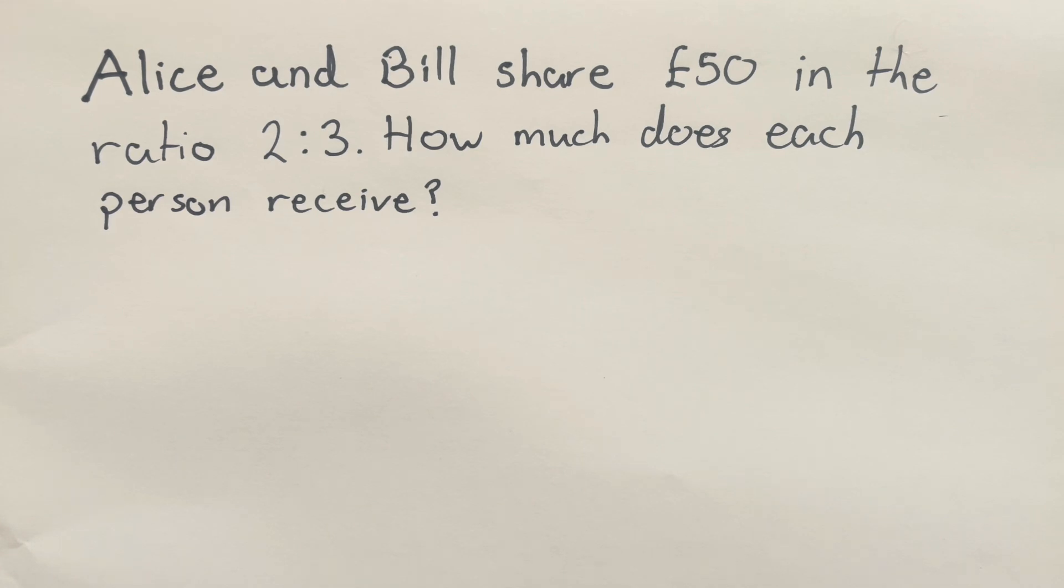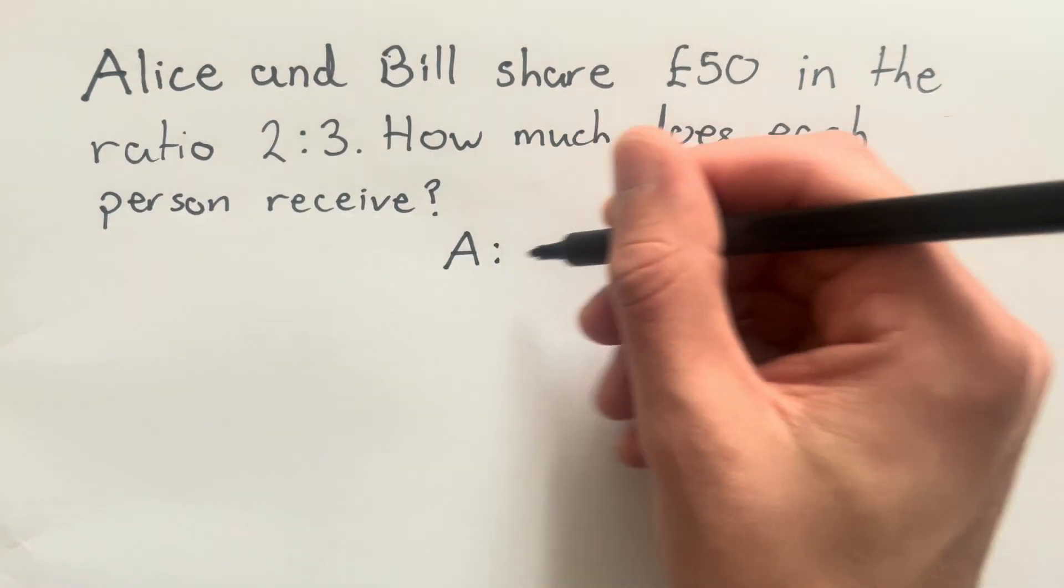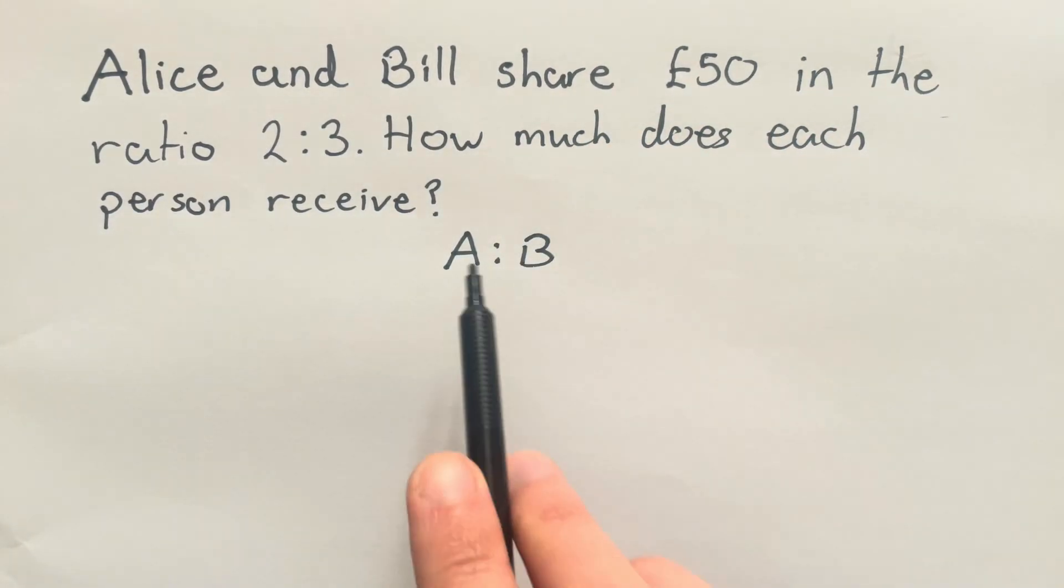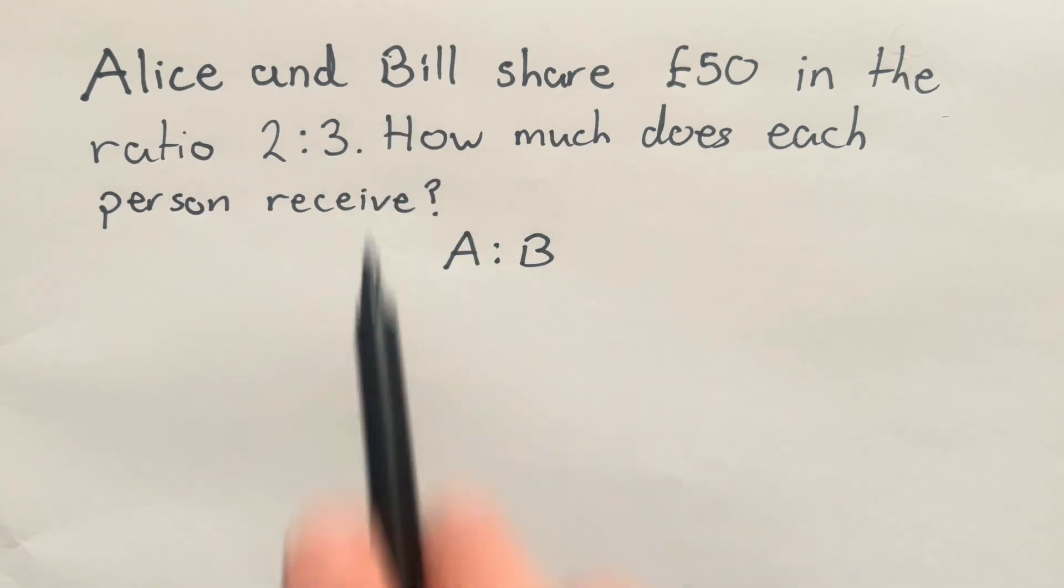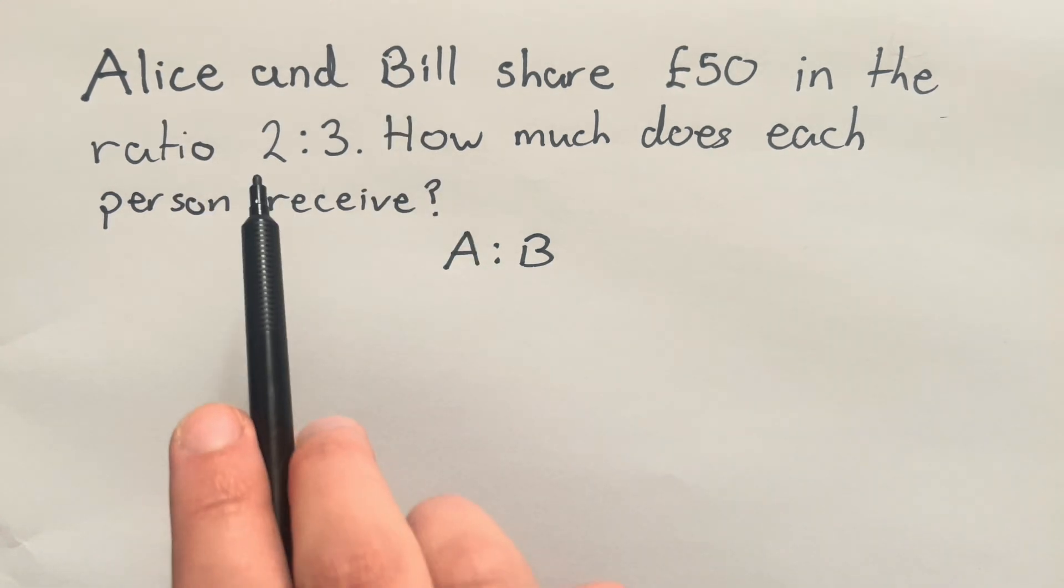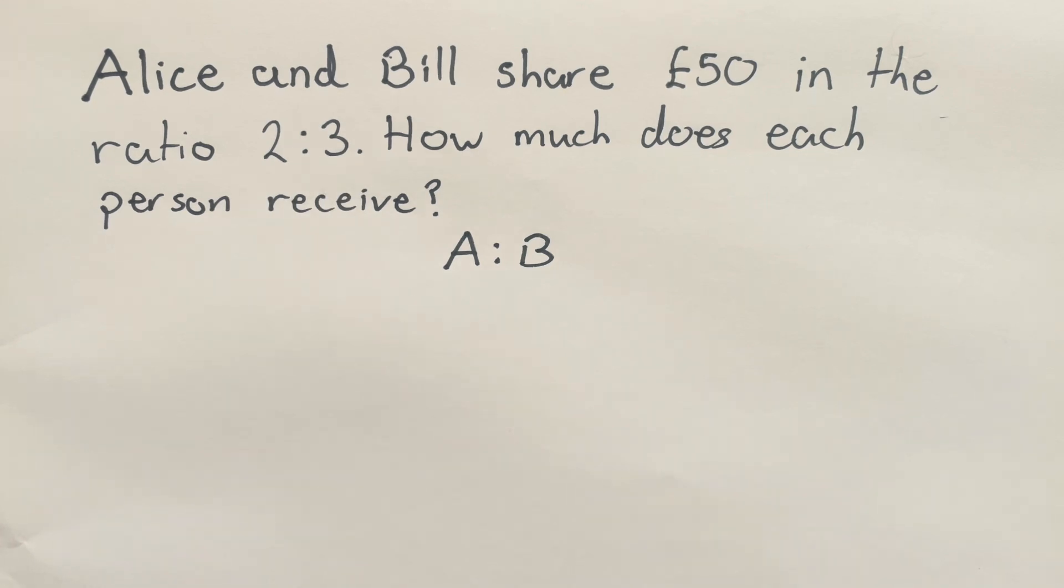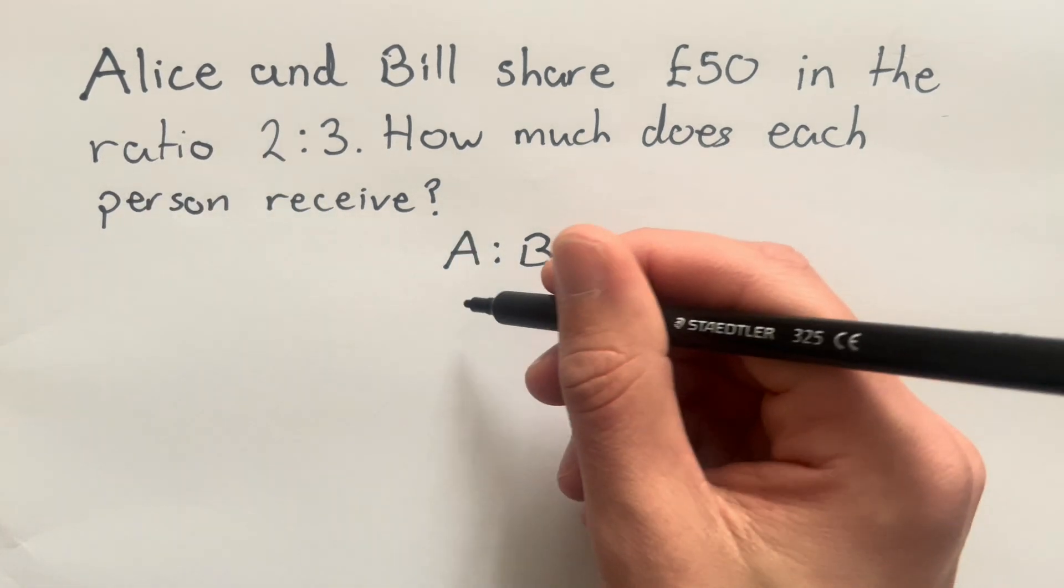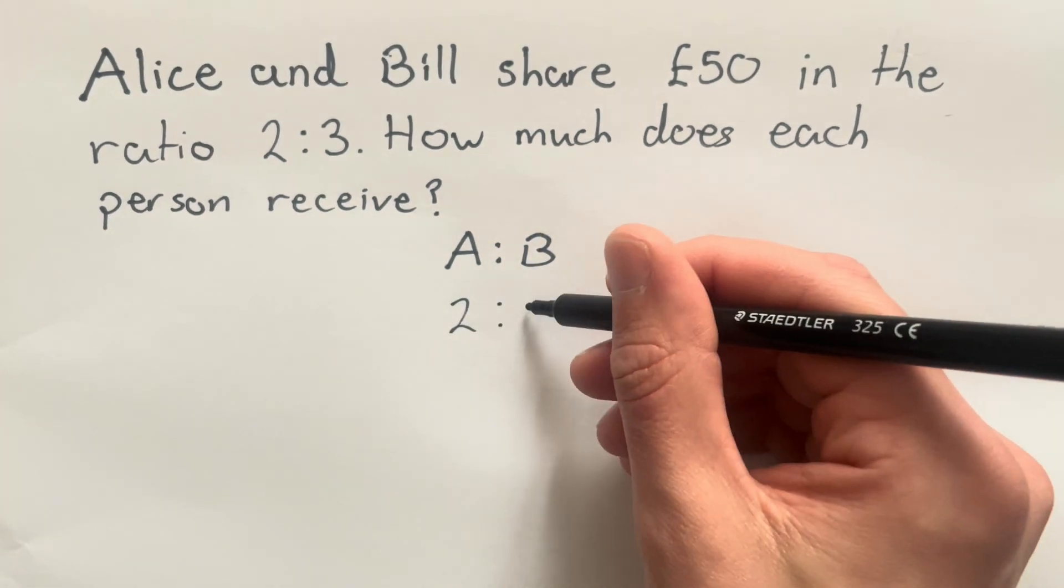So the first thing that I would do anytime I see a question like this is to label my ratio. Now the two people here are Alice and Bill so I'm going to write a ratio A to B. A for Alice, B for Bill. And the ratio that I'm given for these two people is 2:3 and that's in the same order as it is written in the question.